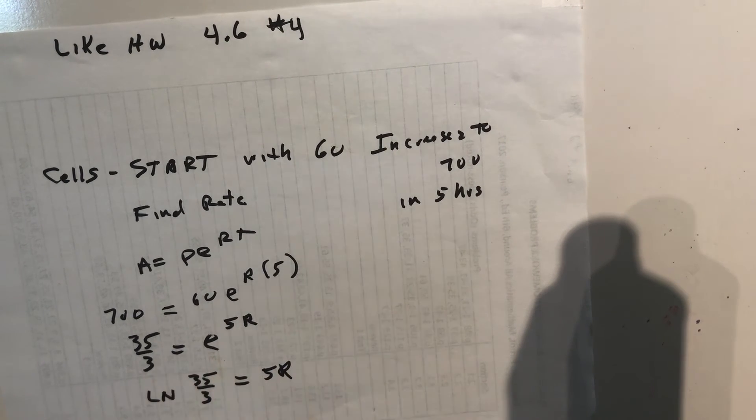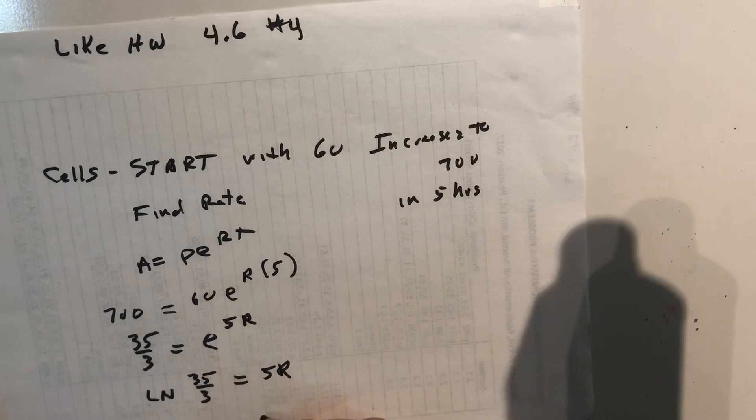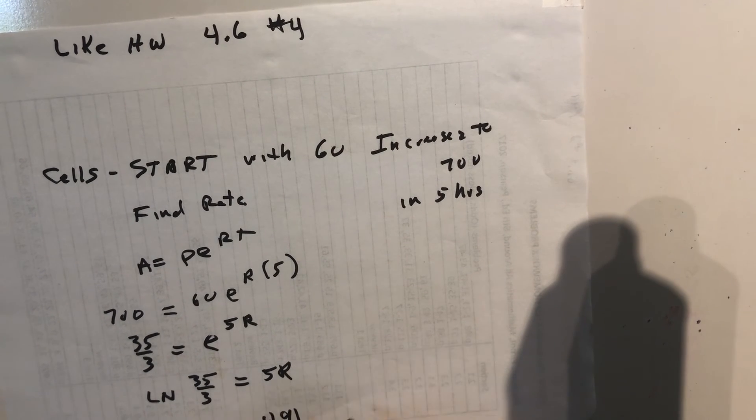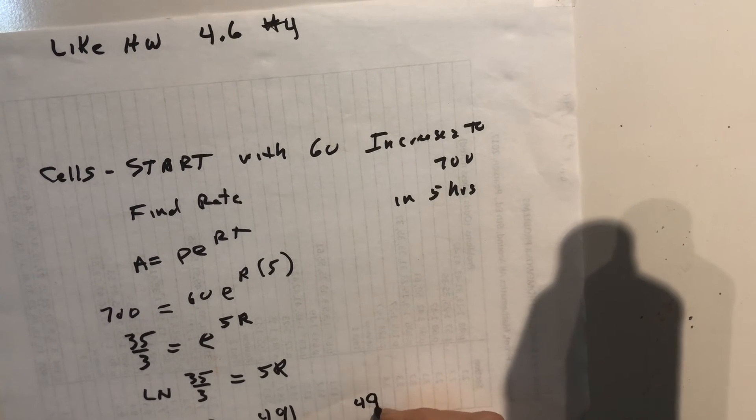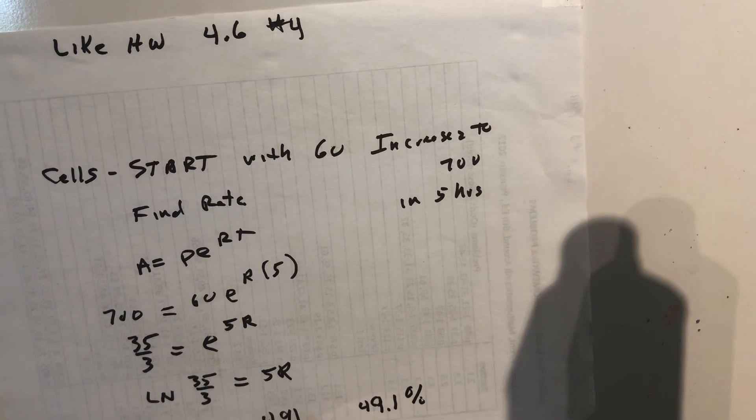Do this on your calculator - divide by 5, and you should get the rate being 0.491. But the directions said to find the percent, so that would be 49.1%. You move the decimal over two places.